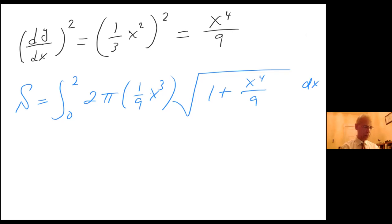So let's use u substitution. Let u equals one plus one ninth of x to the power of four. And so I have du equals, well, the one is zero, so then I have four over nine x cubed dx.